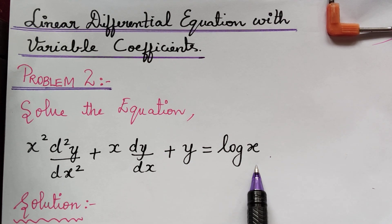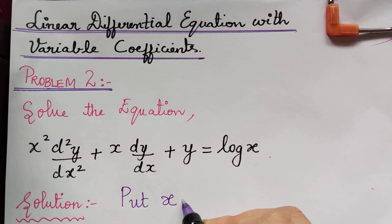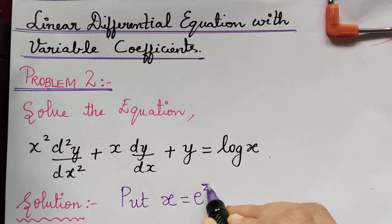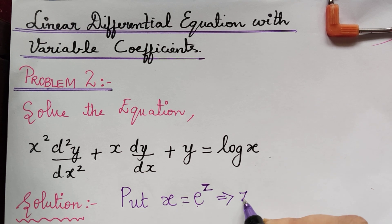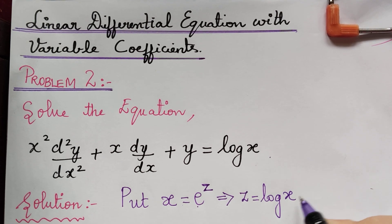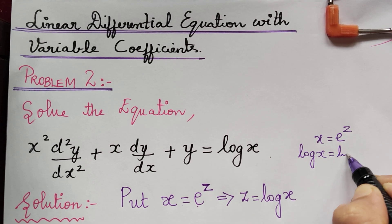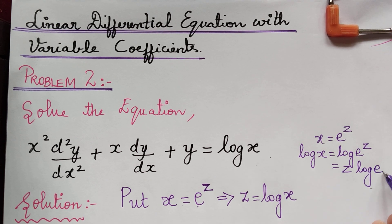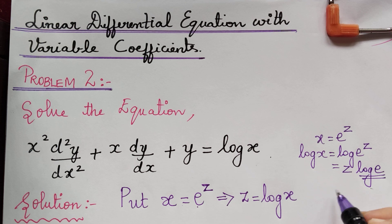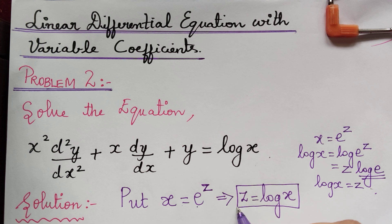In order to solve this equation with variable coefficients, we make a substitution: put x equal to e to the power z, introducing a new variable z such that x equals e to the power z. From this we obtain z equals log x, because taking logarithm on both sides gives log x equals z log e, and since log e equals 1, we get z equals log x.